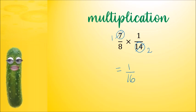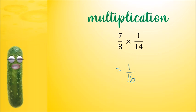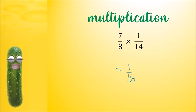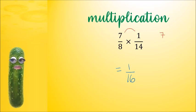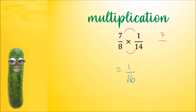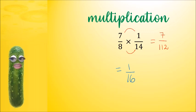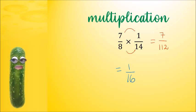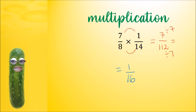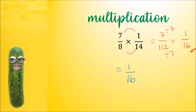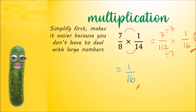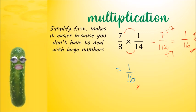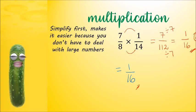Let's see what happens if we multiply the tops by the tops and the bottoms by the bottoms without simplifying first. So 7 times 1 is 7, and 8 times 14 — it's super annoying to work out — is 112. Once we get that, we notice we still have to simplify: 7 divided by 7 is 1, and 112 divided by 7 is 16. So we get to the same answer, but this way it's much longer and more complicated. So simplify first whenever you can — it makes it easier because you don't have to deal with large numbers.